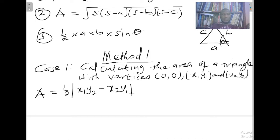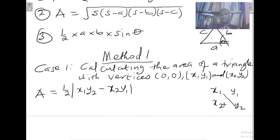We will just substitute the coordinates in place of x1, y1, x2, y2 without any stress. In case you are struggling to understand how we got the formula, you write your x1, x2, then y1, y2. The product on the solid line comes first, and then minus the product on the broken line. Let's take an example quickly to solve this.